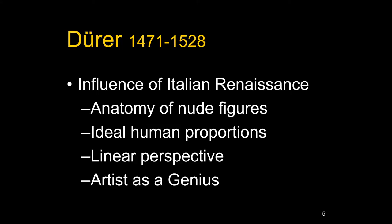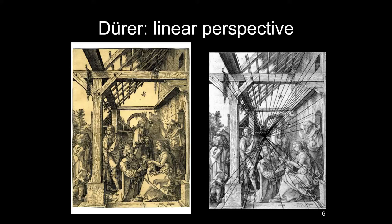Let me show an example of linear perspective with Dürer. This woodcut of the Adoration of the Magi — not in your textbook — has the image on one side, and a diagram showing how all the lines oblique to the picture surface meet at a single vanishing point, approximately in the center. The extended lines include the rafters, the joints between the blocks of the threshold, and the edges of the plinth or pedestal on which the vertical support rests. This had to be figured out mathematically.